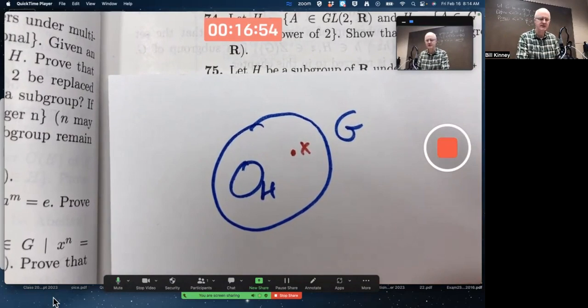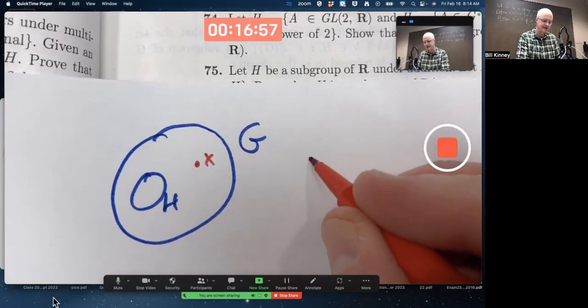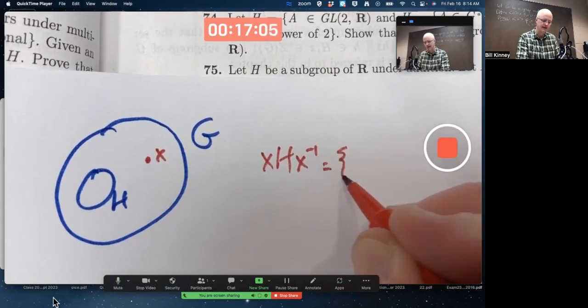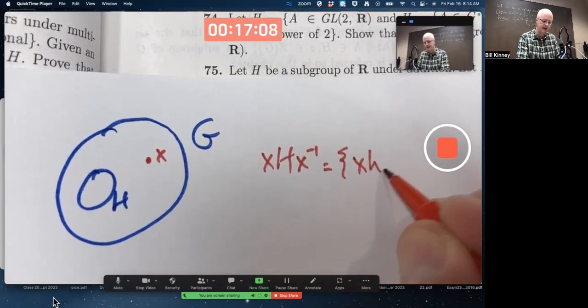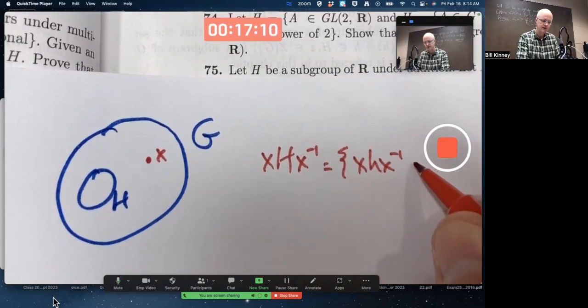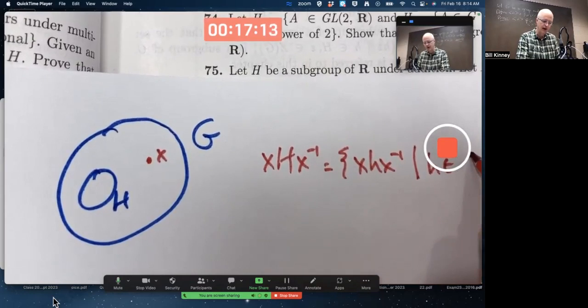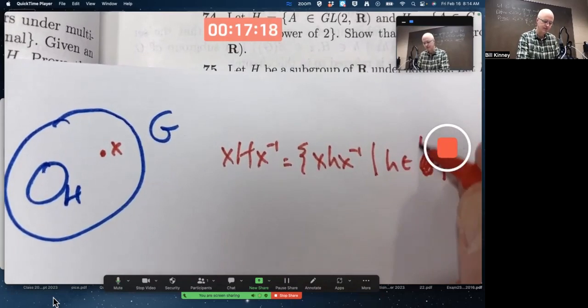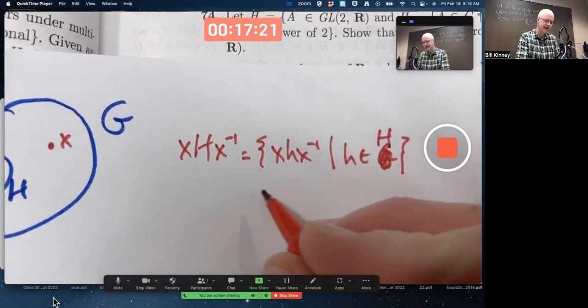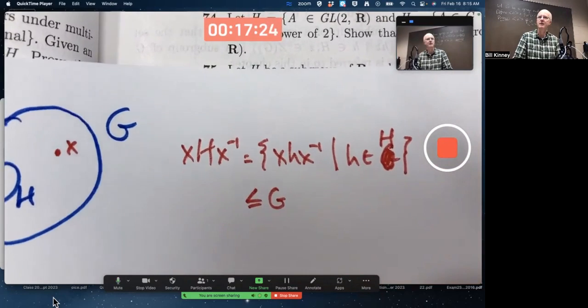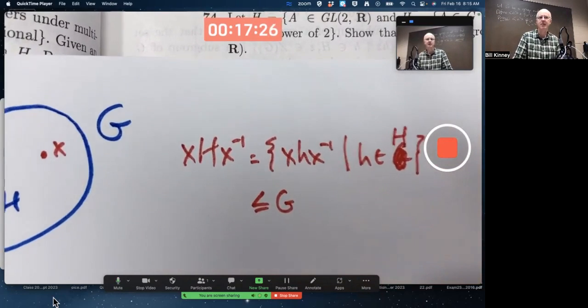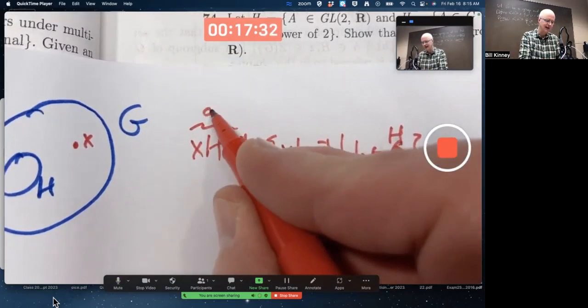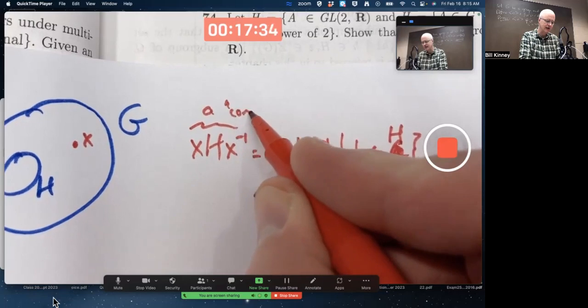Part A of this problem says that this set xHx^(-1), which is again the set of all products of the form x times little h times x inverse as little h varies over capital H, this is a subgroup of G. That's the goal of the first part of this problem. It's a pretty important thing. X is fixed. This is called a conjugate of H.